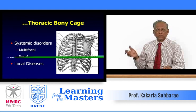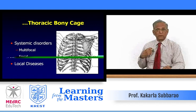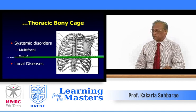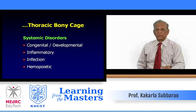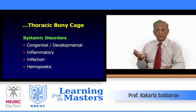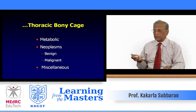A systemic disorder may be multifocal or focal. For example, take tuberculosis — you may find tuberculosis of the rib at the costo-sternal junction on a PA chest film. Local neoplasms or gangliomas can also be seen by looking at the ribs. Systemic disorders reflected on the thoracic cage include: congenital or developmental conditions, inflammatory lesions such as eosinophil granuloma or histiocytosis X, bacterial infections, hemopoietic disorders like anemias and leukemias, metabolic disorders, and neoplasms both benign and malignant.